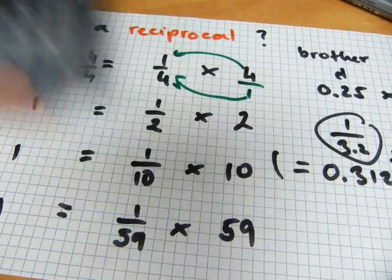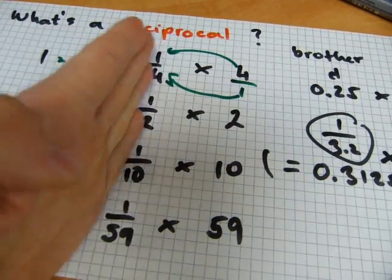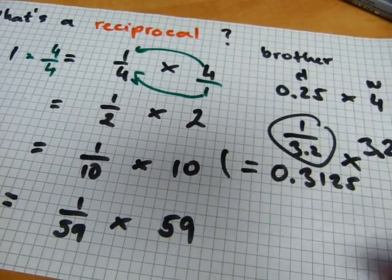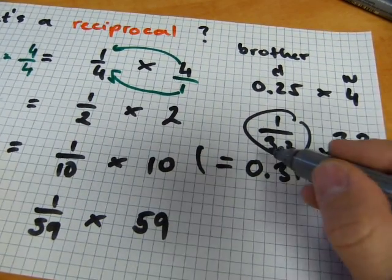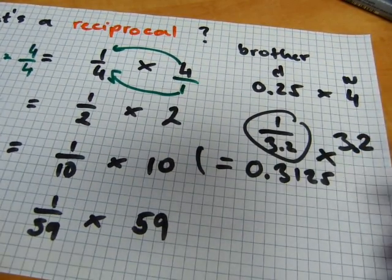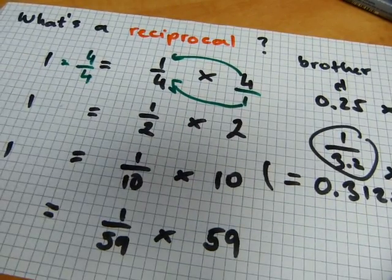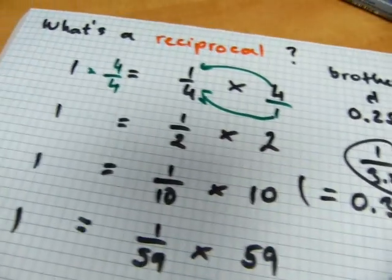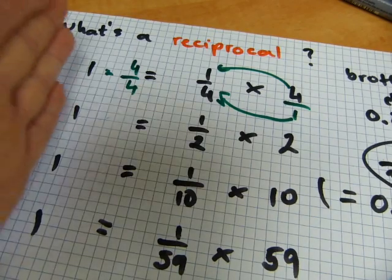Okay, so whole numbers have reciprocals. These fractions or decimals have reciprocals and other decimals. It works either way. So these numbers are reciprocals, because that product makes one.